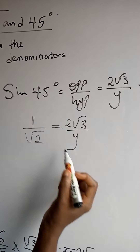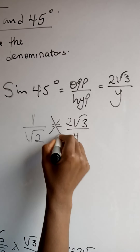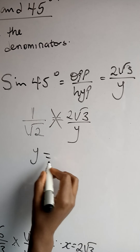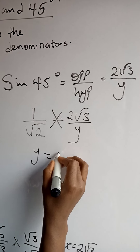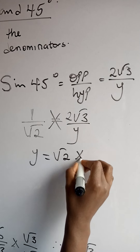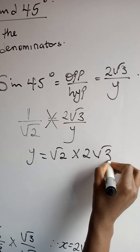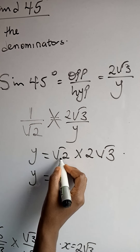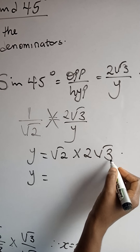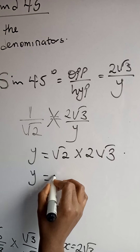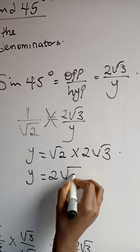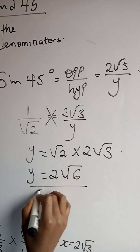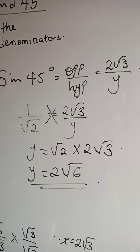To get Y we cross multiply: Y times 1 gives Y, and root 2 times 2 root 3 gives 2 root 6. So Y equals 2 root 6. This will be our final answer.